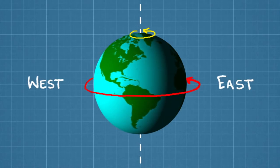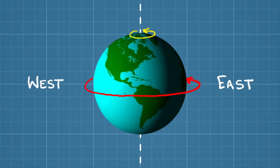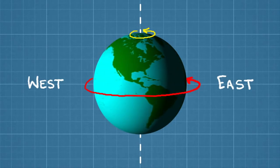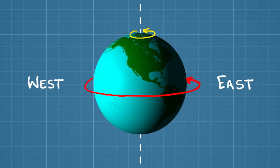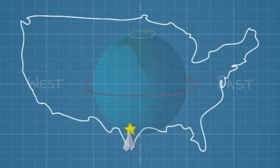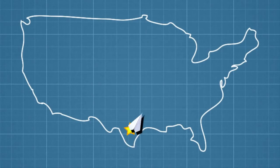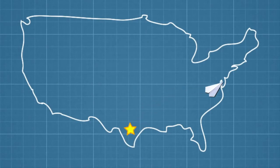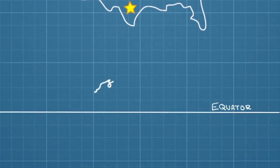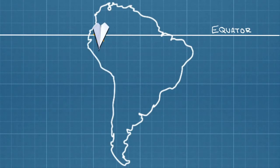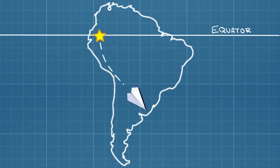That means the paper airplane is spinning faster as well. And when you throw it, that spinning momentum is conserved. So if you threw your paper airplane in a straight line toward the north, it would land somewhere to the right of Nebraska, maybe in Delaware. So from your point of view in Texas, the plane would have taken a curved path to the right. The opposite would happen in the southern hemisphere — an object traveling from the equator to the south would get deflected to the left.